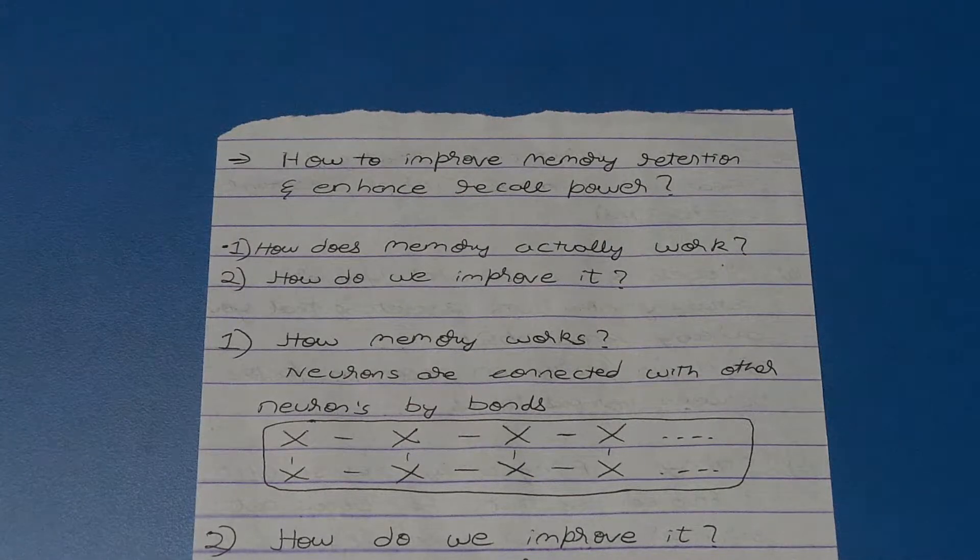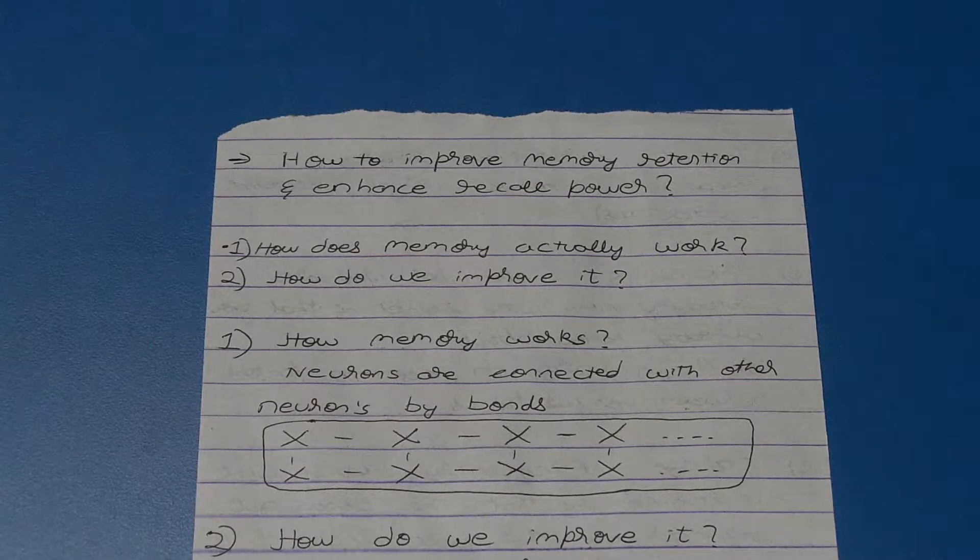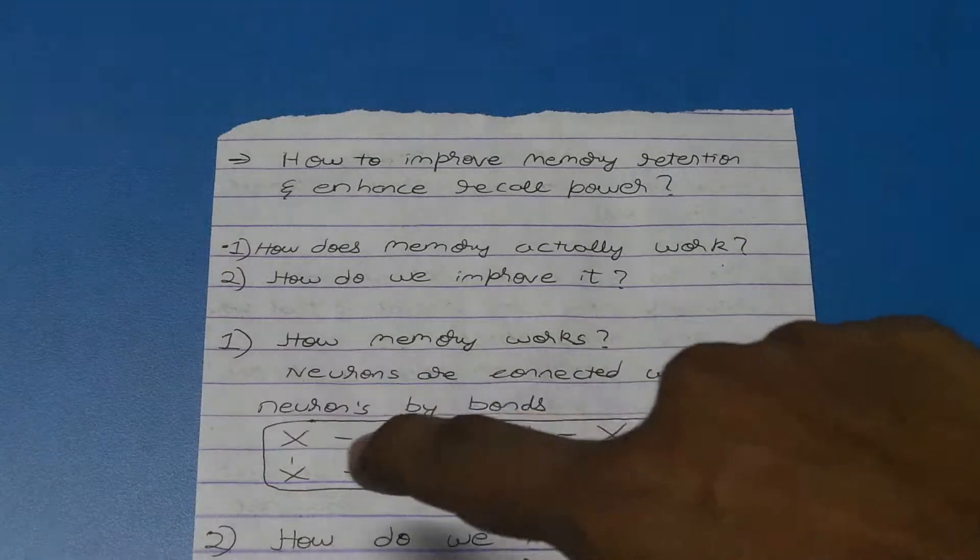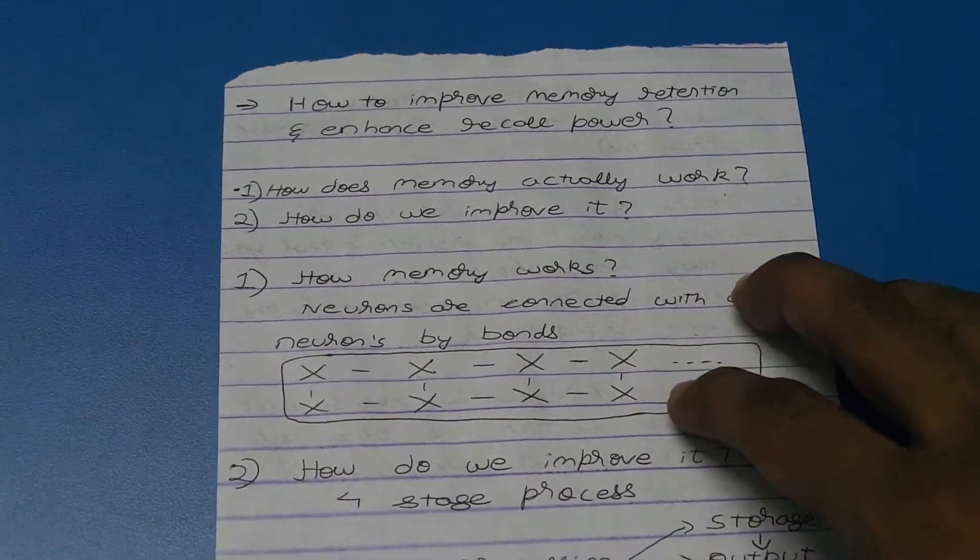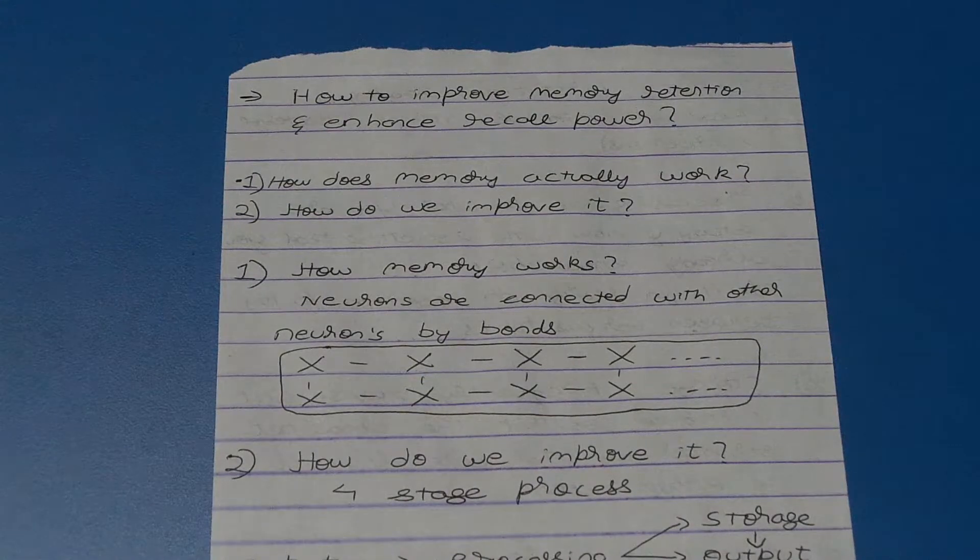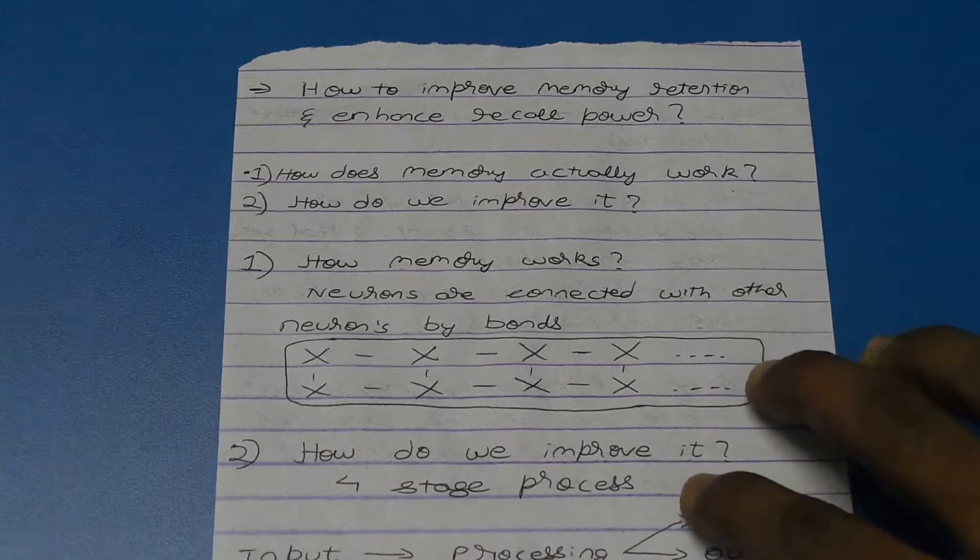We can take this X as a neuron and this hyphen as a bond between the neurons. The stronger these bonds are, the longer we will be able to remember whatever is stored in them and recall them. Now we will get to the technique of how we can actually improve our memory.